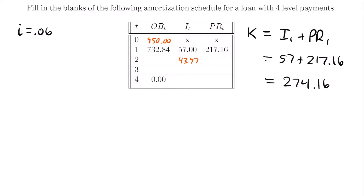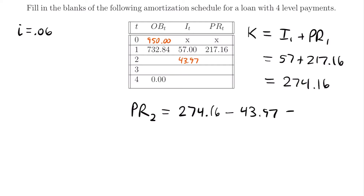The principal at time two equals the payment minus the interest accumulated at time two: $274.16 minus $43.97, which equals $230.19. We can fill that in: $230.19. Then subtracting this principal from the outstanding balance at time equals one — 732.84 minus 230.19 — gives us the outstanding balance at time equals two: $502.65.